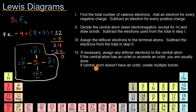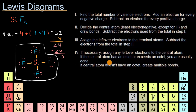Finally, if a central atom does not have an octet, create multiple bonds. In this example we were able to stay simple with just single bonds, but in future examples we're going to see where we might have to do some of these more nuanced steps. I'll see you in the next example.